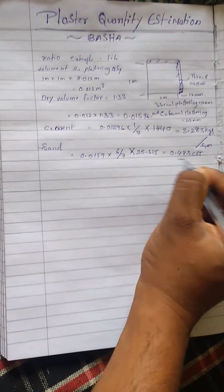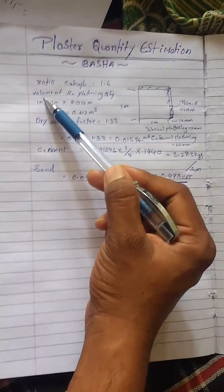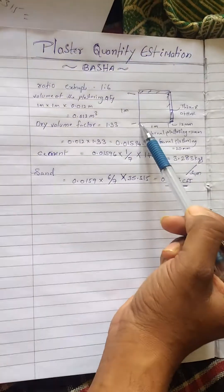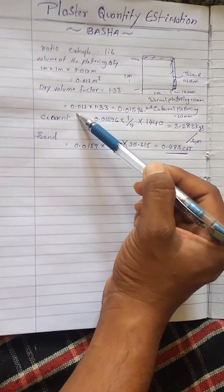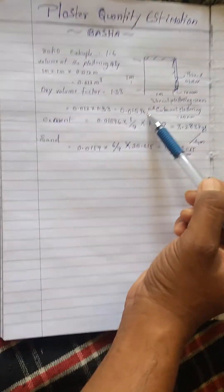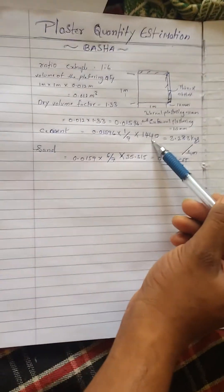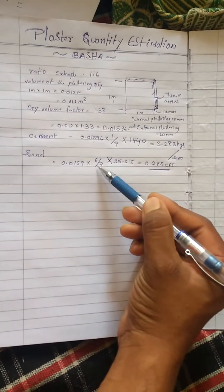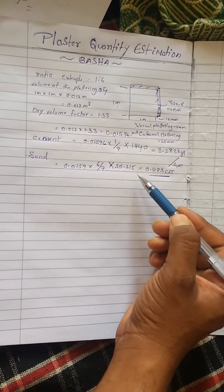Summary: for a 1:6 ratio, calculate the plaster volume for an area of 1 meter by 1 meter. Apply the dry volume factor of 1.33. For cement, use one part divided by seven, then multiply by the density of cement in kg. For sand, use six parts divided by seven, then convert to CFT using 35.315. Thank you friends.